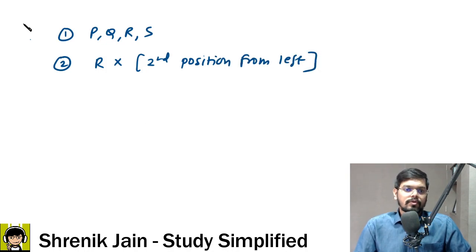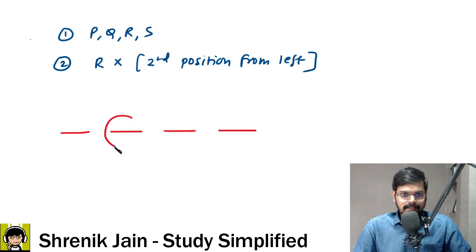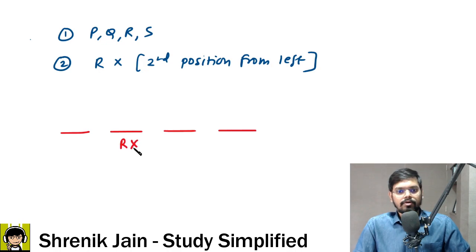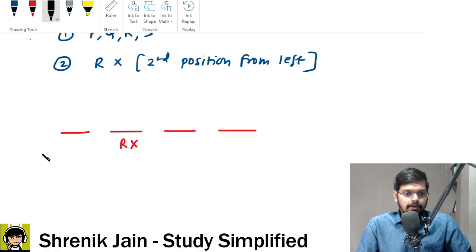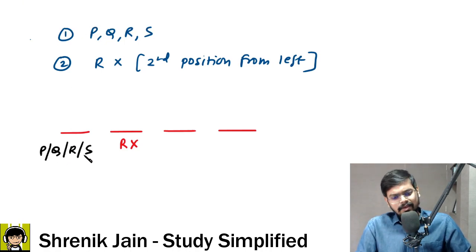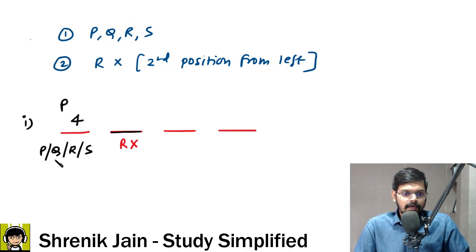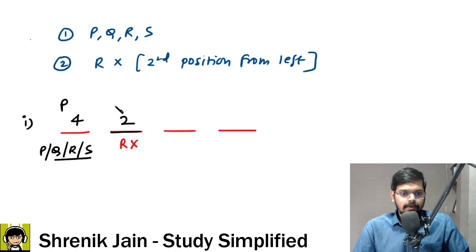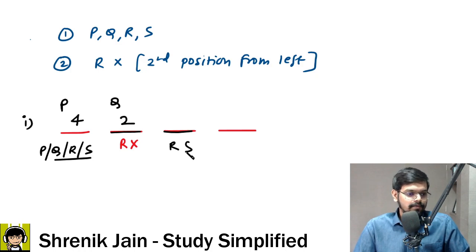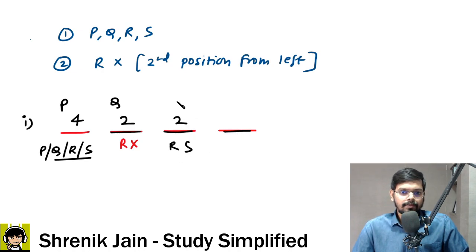So after seeing the data, my brain visualized: first position, second position, third position, fourth position. This is the second position from the left — R should not be seated here. So in the first position, P or Q or R or S — anyone can come, that's four possible ways. If P came here, Q, R, S is left, but R cannot come to the second position, so only two possible ways to fill it.